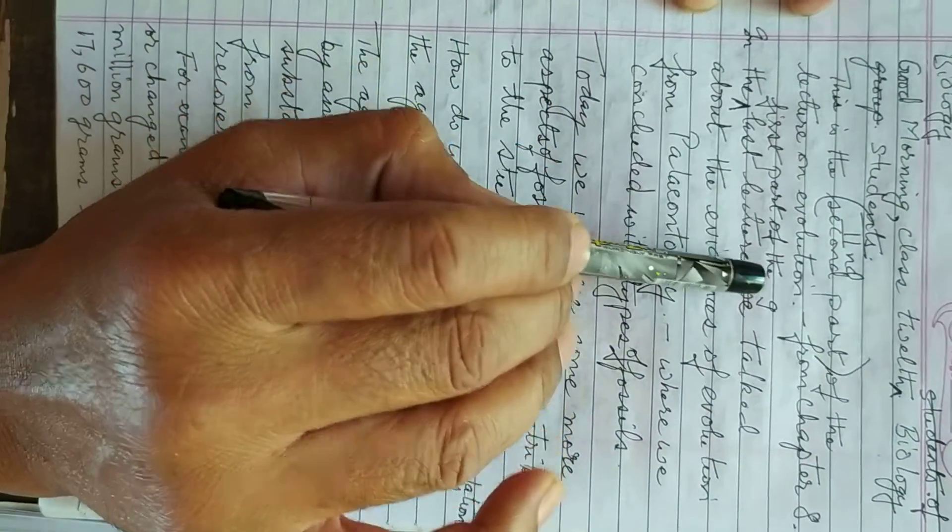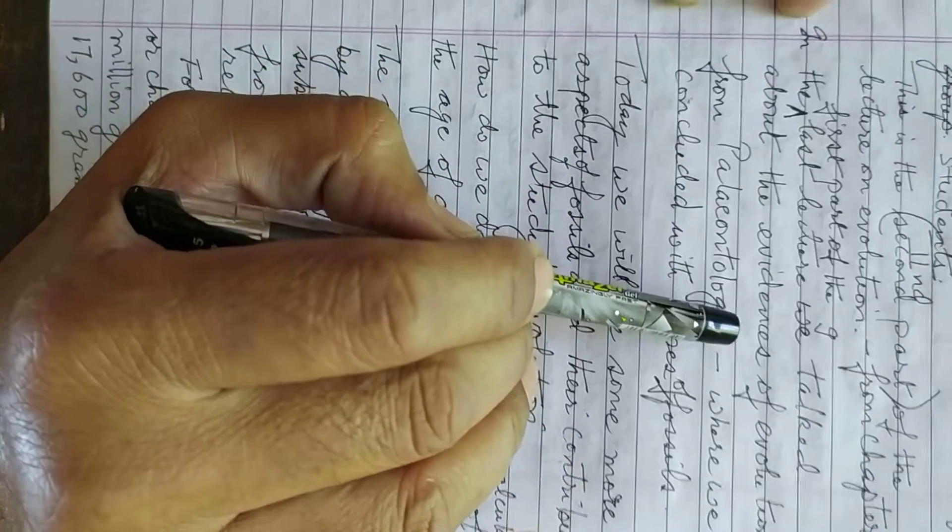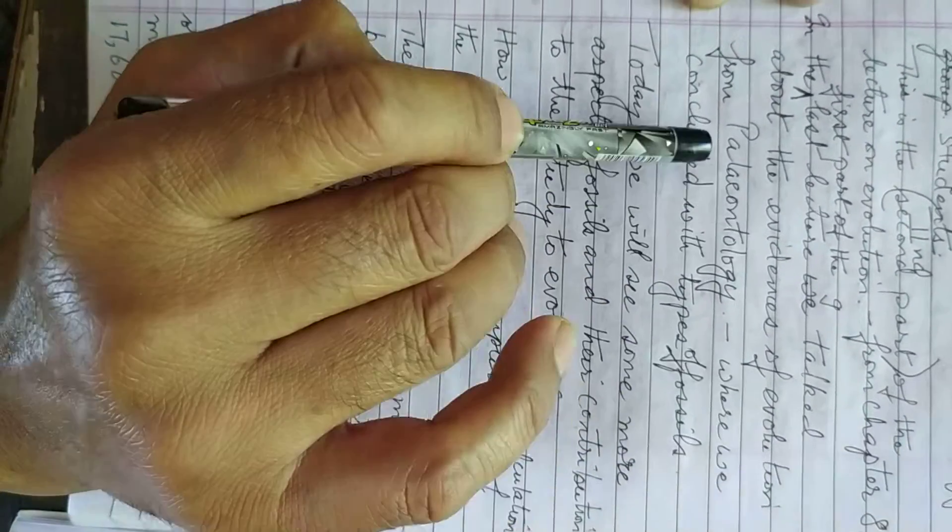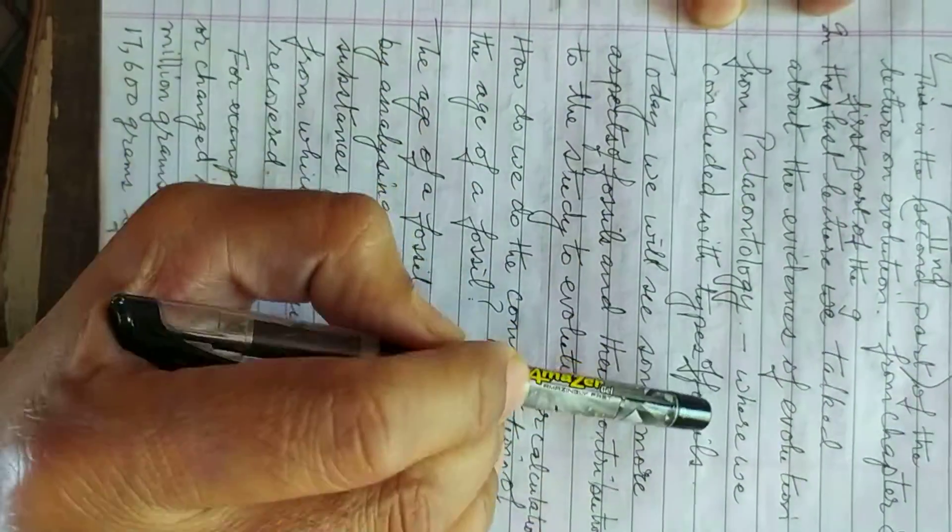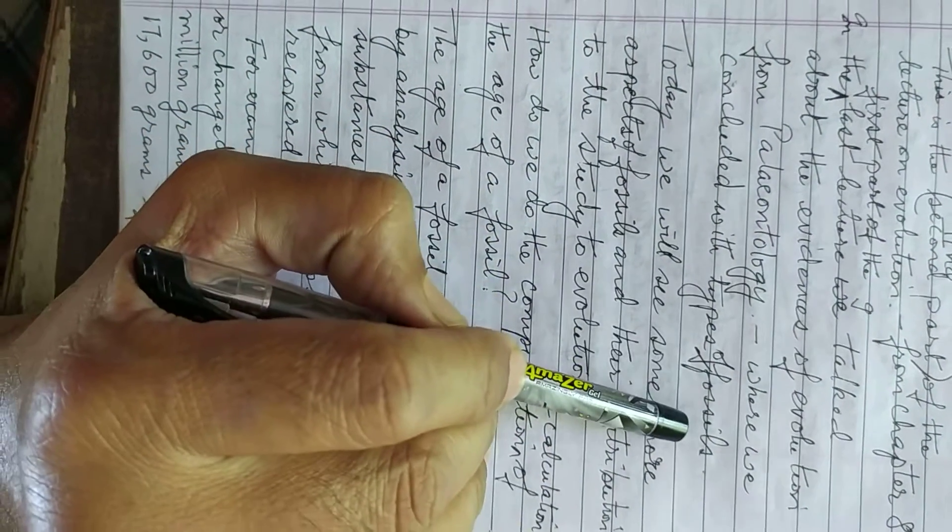In the first part of the last lecture, I talked about the evidences of evolution from paleontology, where we concluded with types of fossils.